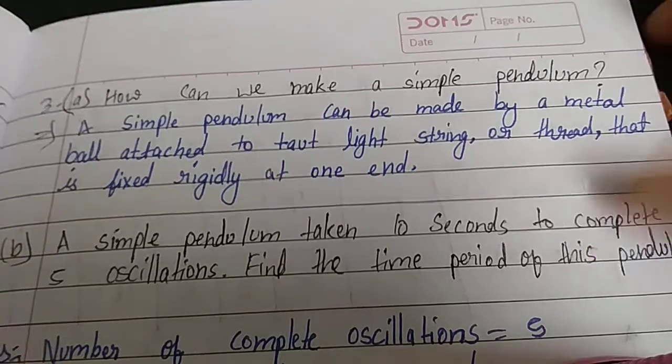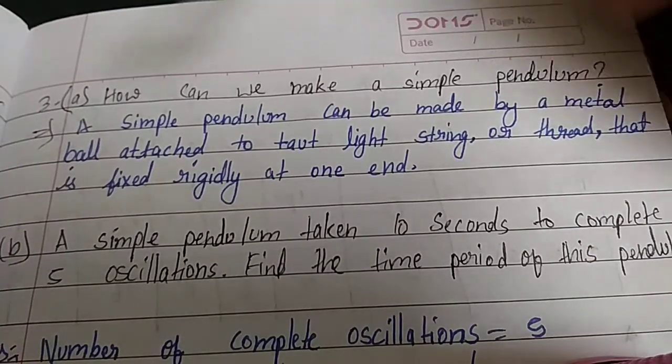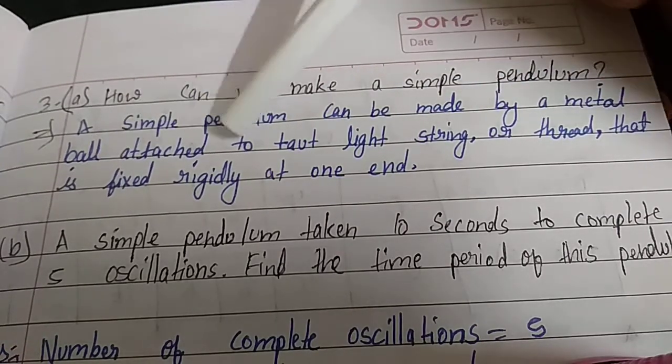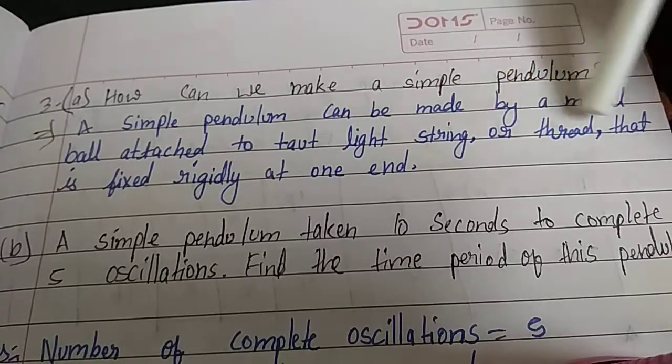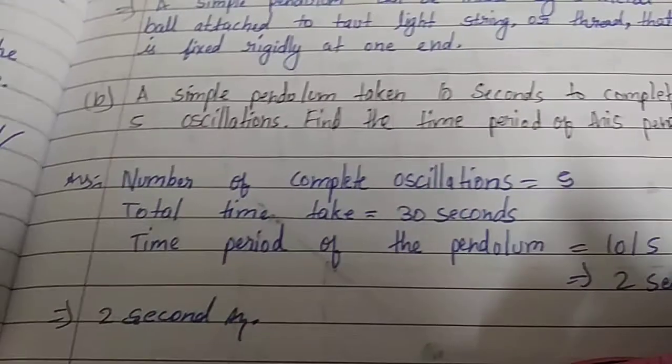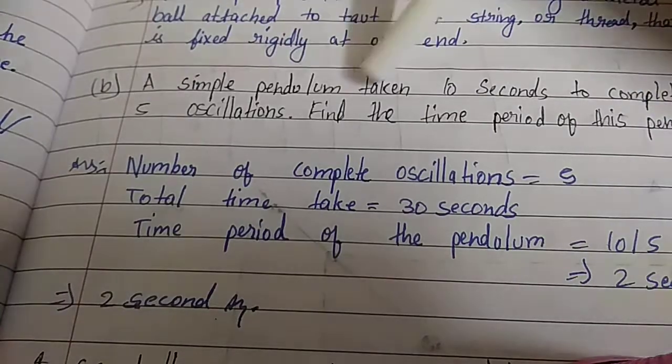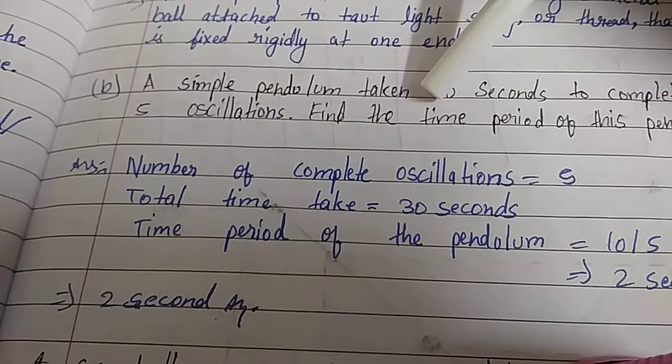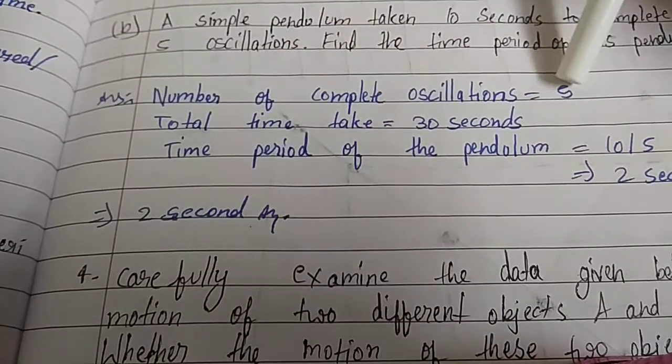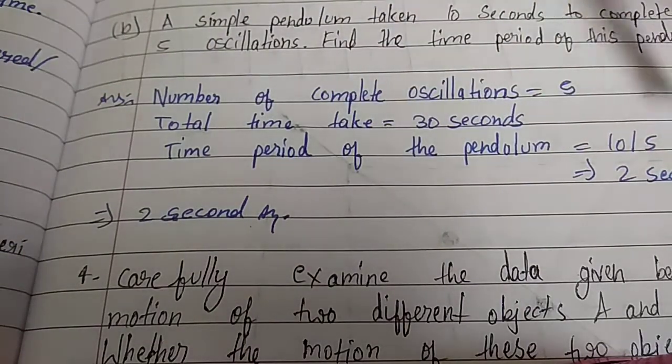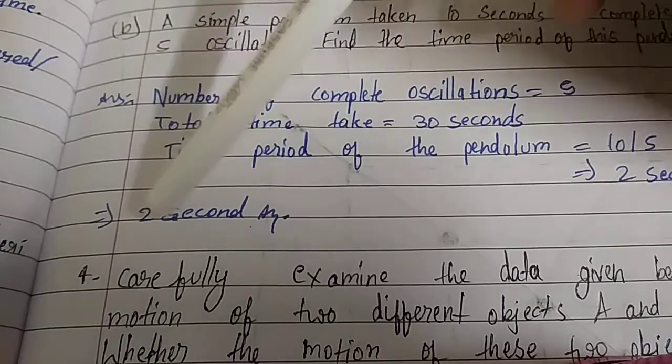Tenth question: How can we make a simple pendulum? A simple pendulum can be made by a metal ball attached to a light string or thread that is fixed at one end. B) A simple pendulum takes 10 seconds to complete 5 oscillations. Find the time period of the pendulum. Answer: Number of complete oscillations equals 5, total time taken 10 seconds, time period of the pendulum equals 10 upon 5 equals 2 seconds.